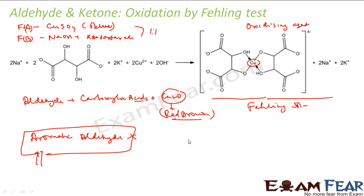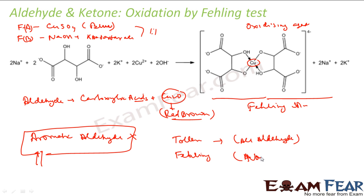To summarize: Tollen's test is positive for all aldehydes and negative for ketones. Fehling's test is positive for non-aromatic (aliphatic) aldehydes only. To differentiate between an aldehyde and a ketone, simply apply Tollen's test; if you get the silver lining it's an aldehyde. For distinguishing aliphatic from aromatic aldehydes, use Fehling's test.